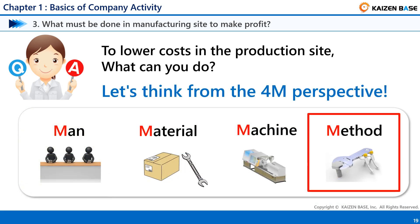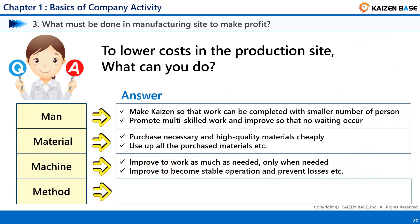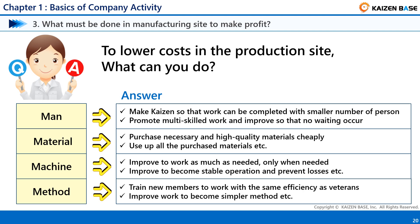Next, from the perspective of Method: train new members to work with the same efficiency as veterans, and improve work to become a simpler method. That is what you can do to lower production costs from the perspective of method.